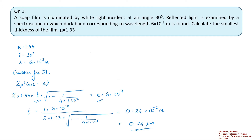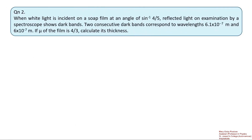It is in the micron range, so we learn that a thin film is defined as such when its thickness is of the order of micrometers. In the next problem, white light is incident on a soap film at an angle of sin⁻¹(4/5), and the reflected light examined by a spectroscope shows dark bands. Two consecutive dark bands correspond to wavelengths 6.1×10⁻⁷ m and 6×10⁻⁷ m. If the refractive index mu of the film is 4/3, calculate its thickness.